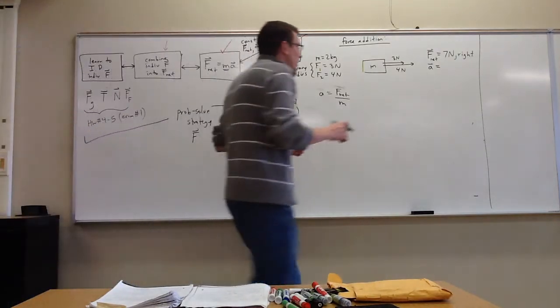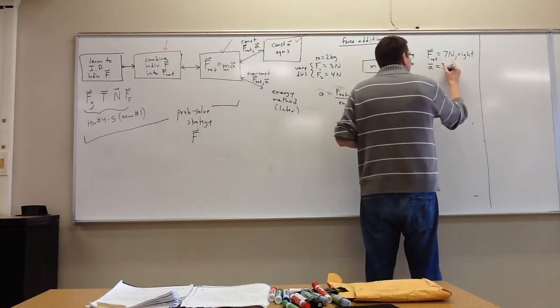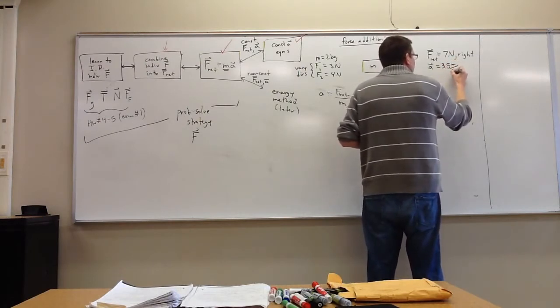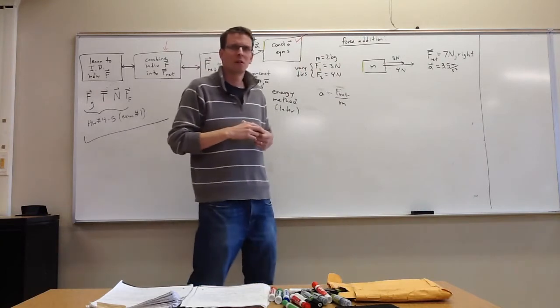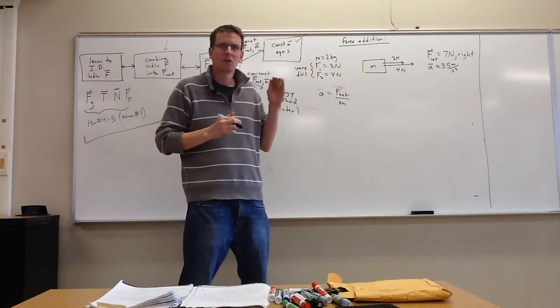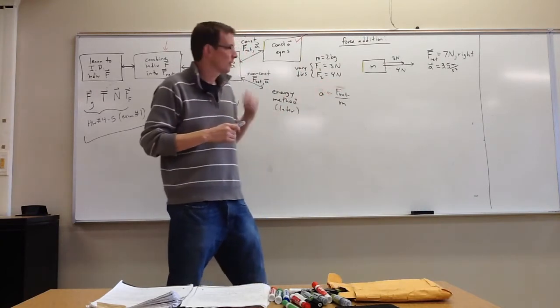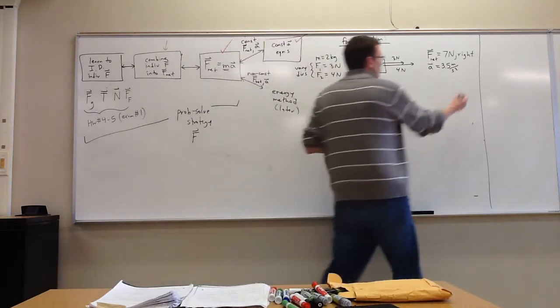7 over 2 is 3.5, so that's 3.5 meters per second squared. And what's the direction of the acceleration? Also to the right. The acceleration and net force are always in the same direction.